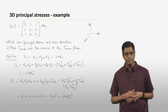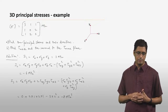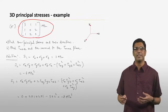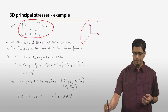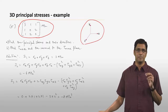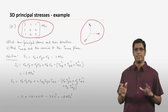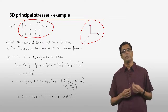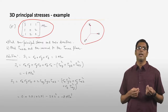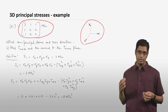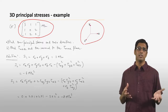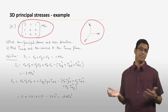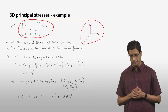So here's the example. In this case we are given the stress matrix in the XYZ coordinate system. We are looking at stress at a specific point, given by this stress matrix sigma. We are asked to find out the principal stresses and principal directions for this particular point, and also the maximum shear stress and the normal to the maximum shear stress plane.